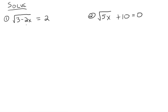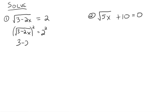In order to get rid of the square root, we need to square both sides. If this is equal, then if you square both sides, it should still be equal. Why do we do that? Because the square undoes the square root and just leaves you 3 minus 2x. And then 2 squared is equal to 4. And then we've got this simpler equation to solve.